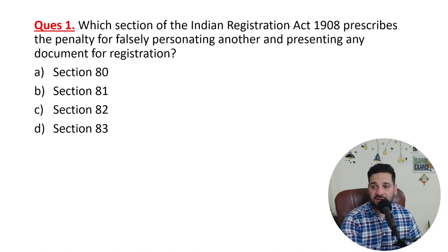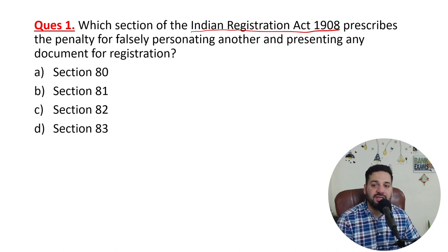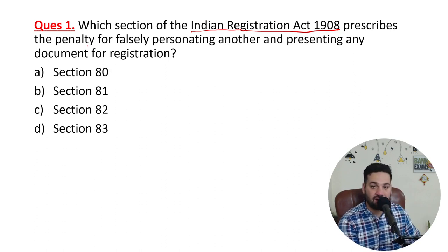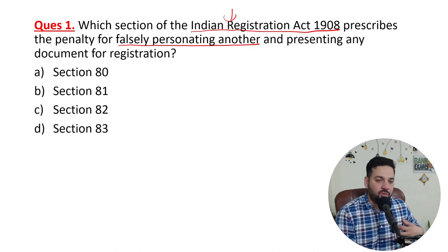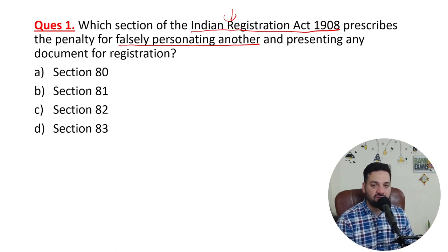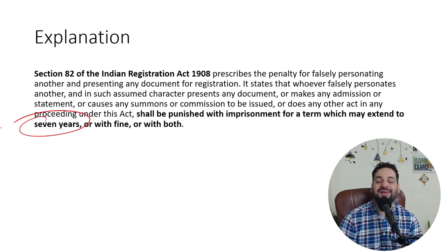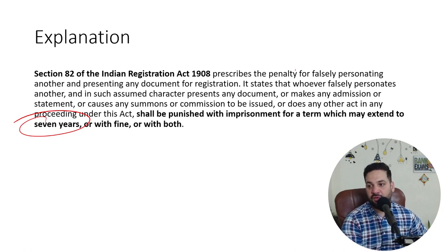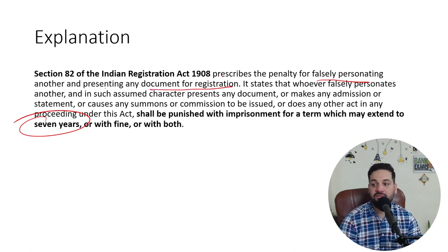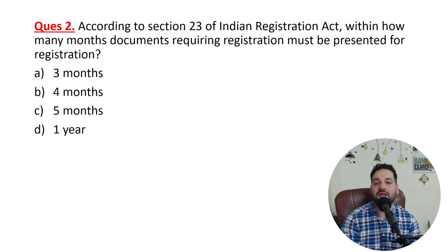Which section of the Indian Registration Act 1908 prescribes a penalty for falsely impersonating another? For example, your name is Ram but while registering a document you tell the authority your name is Ramandeep Singh. Under Section 82, you can get imprisonment of 7 years along with a fine. Falsely impersonating another person and presenting a document for registration is a criminal offense — whoever does so can face 7 years of imprisonment with fine.